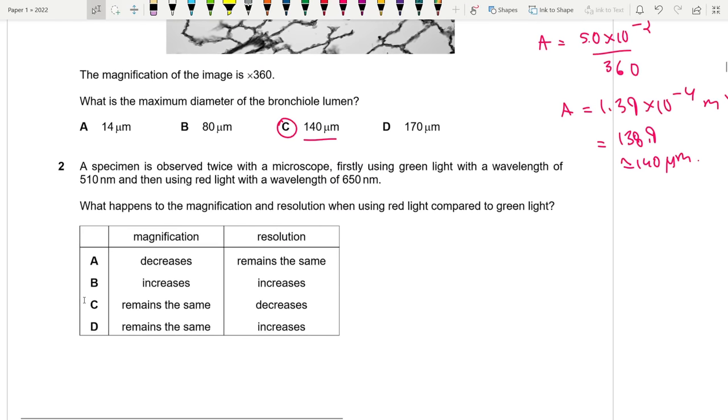A specimen is observed twice with a microscope, firstly using green light with a wavelength of 510 and then using red light with a wavelength of 650 nanometers. What happens to the magnification and resolution when using red light compared to green light? Basically, guys, red light has greater wavelength. The smaller the wavelength, the greater the resolution. Because according to the definition, resolution is half the wavelength of light used. Smaller wavelength means greater resolution. Red light and green light made me think about squid game. When we use red light, our resolution decreases. That is why our answer is automatically C. Magnification doesn't really change because we don't really change the objective lens or the eyepiece.